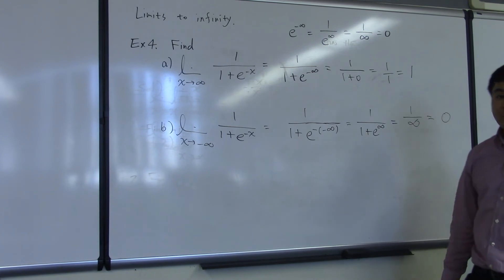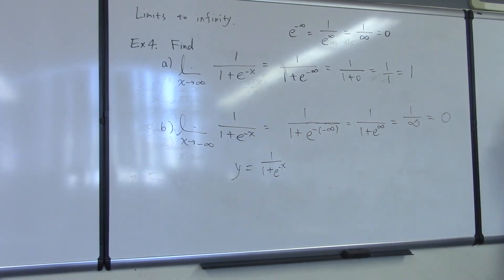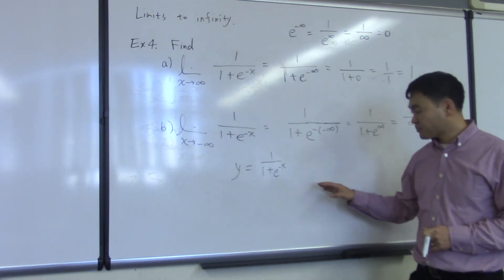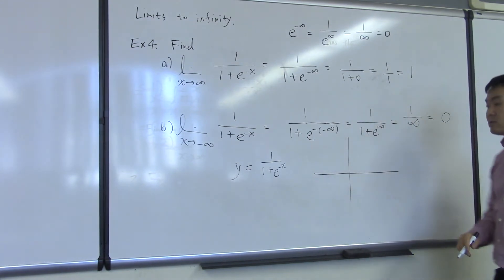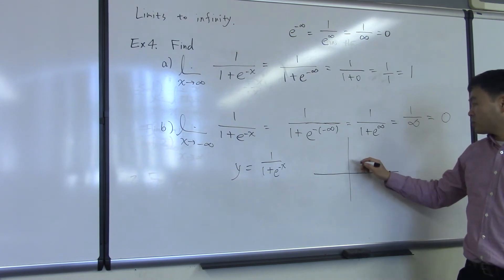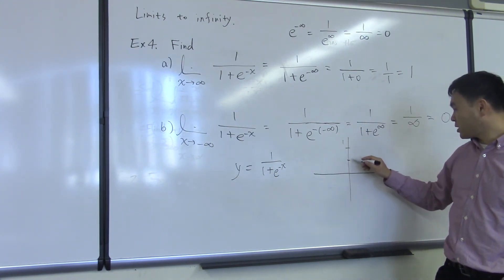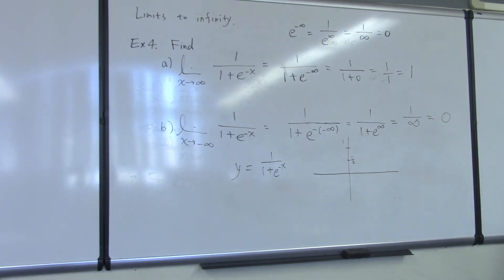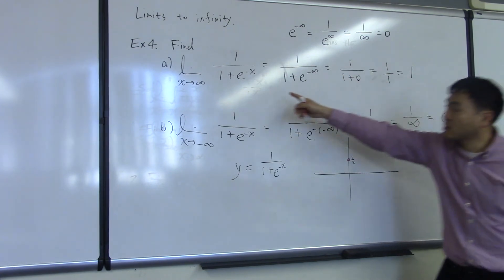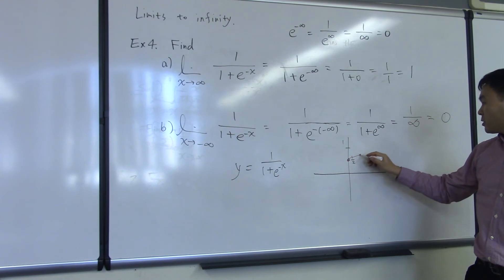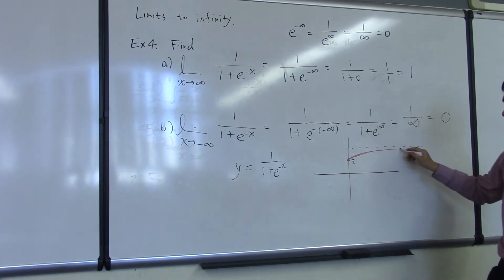Now, what does that mean for the graph of y equals 1 over 1 plus e to the negative x? We'll start curve sketching tomorrow, so we'll eventually figure out how to draw this graph. But for now, if you plug in 0, e to the 0 is 1, so you get 1 over 1 plus 1, which is 1 half. So the graph passes through 1 half as the y-intercept, and it's always increasing. As it increases, it gets closer and closer to 1.